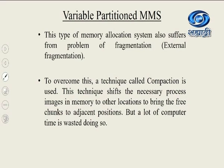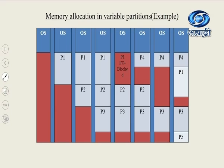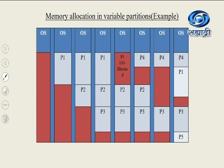This type of memory allocation also suffers from fragmentation — mostly external fragmentation. To overcome this, a technique called compaction is used. This technique shifts the necessary process images in memory to other locations to bring the free chunks to adjacent positions, but a lot of computer time is wasted doing so. In the diagram of variable partition, the memory initially has only the OS loaded and all remaining memory is free. Then process P1 enters and whatever space is required is given to P1. Then P2 and P3 come in. Now only limited space remains, and P4 cannot be fitted.